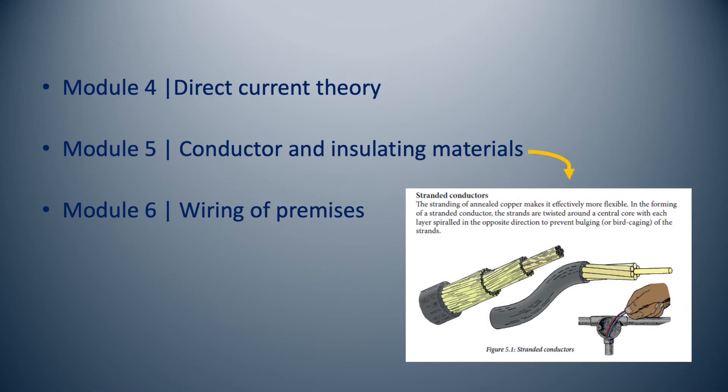Module 4 focuses entirely on direct current circuit theory. Previously this was part of a module on batteries and direct current sources. Module 5 is all about conductors and insulating materials. This used to be the 7th module.